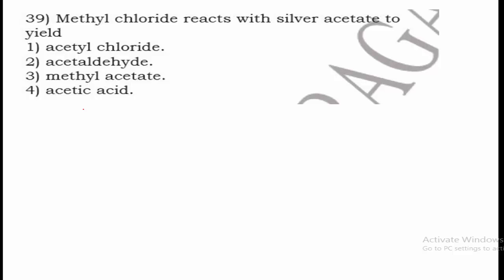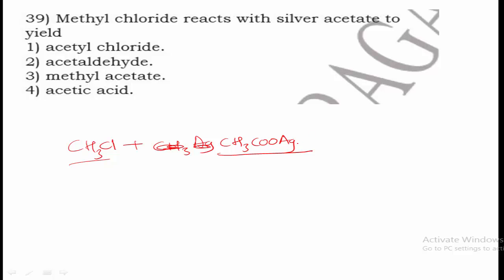Question 39: Methyl chloride (CH3Cl) reacts with silver acetate (AgOOCCH3). When methyl chloride reacts with silver acetate, it gives CH3COOCH3, which is methyl acetate. Therefore option 3 is the right answer.